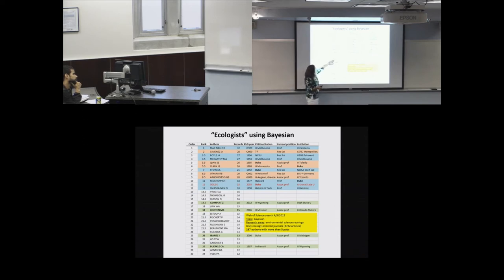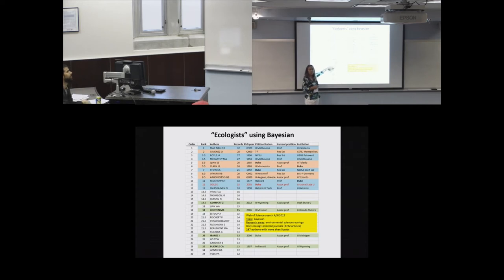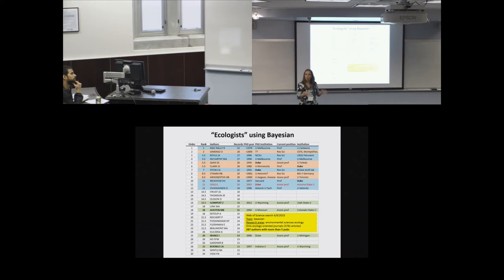Zach Gompert was a PhD student at Wyoming when I was there — he took my Bayesian class, and now he's in the top 30, which I'm very impressed by. Mevan Hooten is a colleague with whom I co-teach a two-week summer course on Bayesian methods for ecologists at Colorado State, focused on faculty, postdocs, and agency scientists. We receive over 100 applications and accept about 25 a year, so encourage your faculty members to apply.